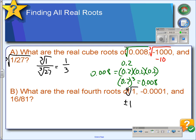If we were to take the fourth root of negative 0.0001, we would say there are no real roots. There are roots, but they're imaginary, and for this chapter we're not going to deal with imaginary stuff. And then the fourth root of 16/81, you'd take the fourth root of 16, which is 2, fourth root of 81, which is 3, and put a plus or minus on it.